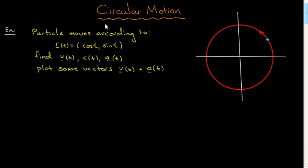The first examples are going to be on circular motion. The first is a typical kind of question you'd be asked: a particle moves according to the following parameterization, which you'll recognize as a circle — a circle of radius one. I've plotted it here, shown large so I'll be able to sketch on it and draw on it easily.